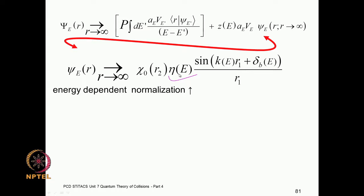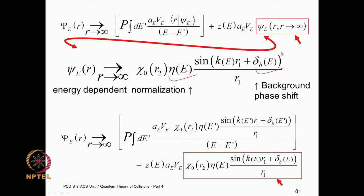The bound state wave function is normalized independently; it is the square-integrable function. We can write these two terms and look at the second term: what is in the red box comes here with this explicit form, inclusive of the energy-dependent normalization, the sinusoidal function divided by r, and the background phase shift. Then we look at the term from which a_E and V_E appear, with χ₀(r) coming here alongside a similar sinusoidal term scaled by a_E V_E.